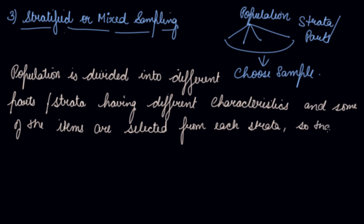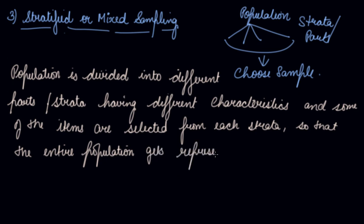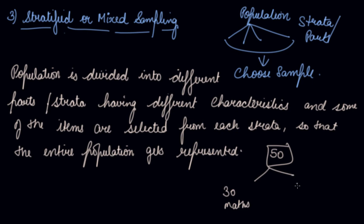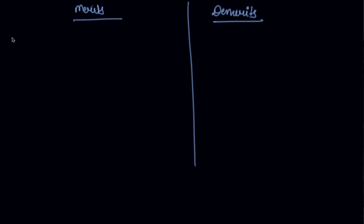According to this method, the population is divided into different parts or strata having the same characteristics, and some items are selected from each stratum so that the entire population gets represented. For example, if there are 50 students in class 11, out of which 30 studied mathematics and 20 studied home science, items would be selected proportionately from each stratum so the sample represents the characteristics of the entire population.